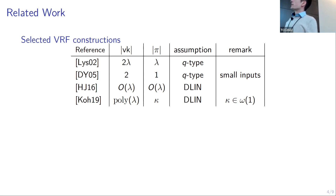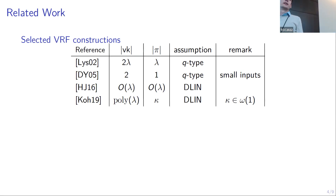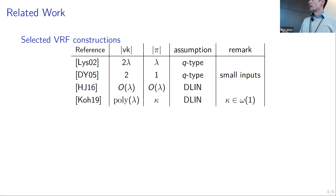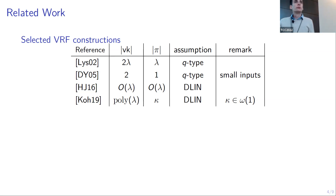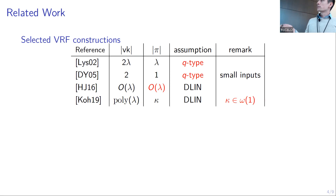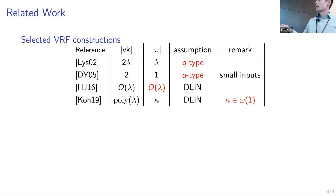Looking at these four constructions, the downsides are: either a q-type assumption or large proofs. The question is: can we get VRFs with constant size proofs — constant in the number of group elements? Most constructions use a consecutive verification strategy and have images with a specific rational form — a generator raised to a power expressible as a numerator divided by a denominator, both polynomials in the verification key exponents. Our first contribution shows that if you use this consecutive verification approach, the image will always have this rational form, with degree at most exponential in the proof size.